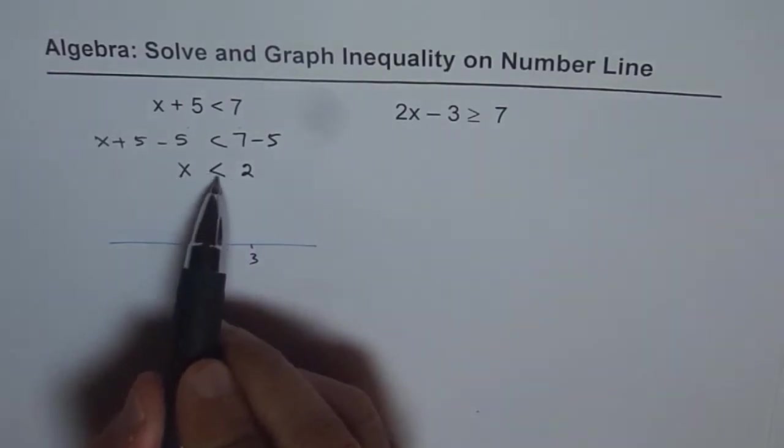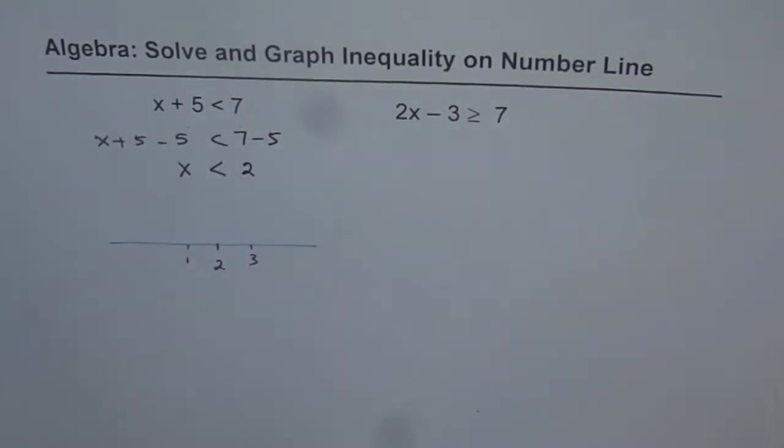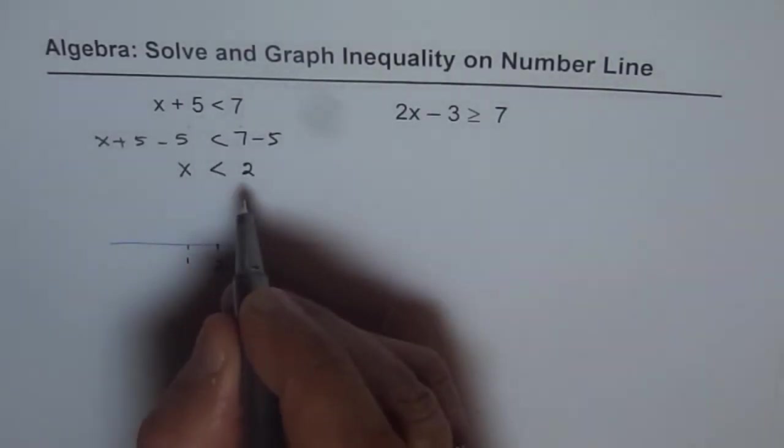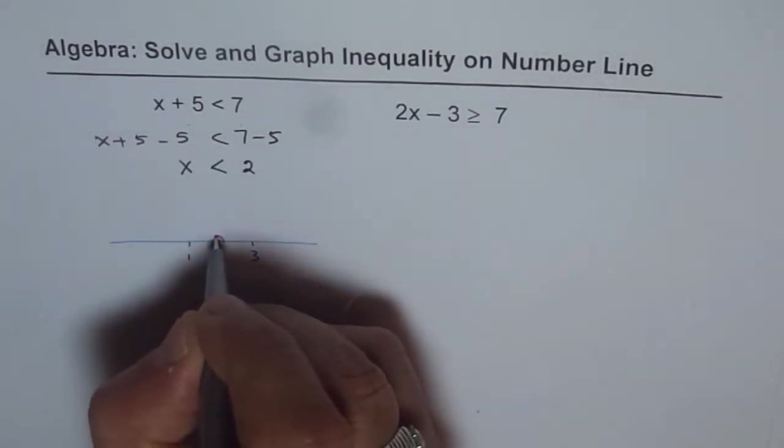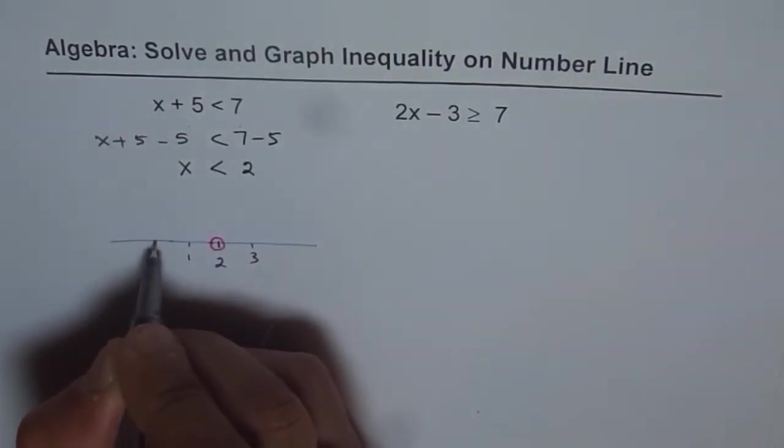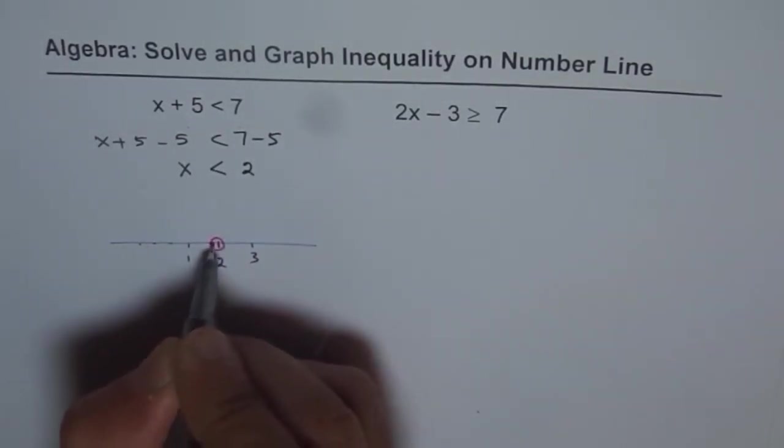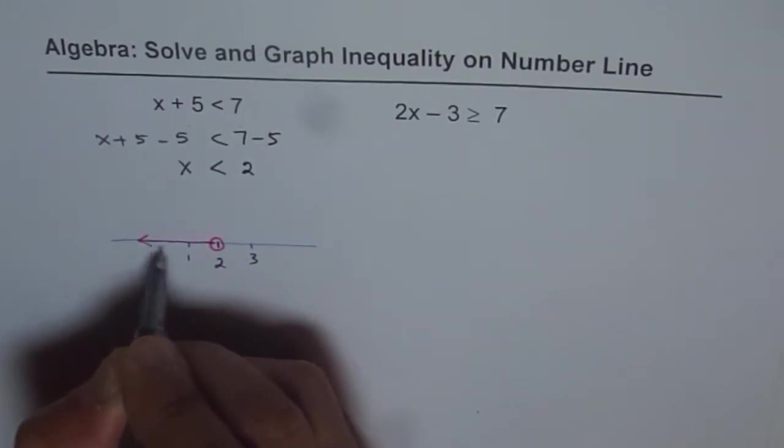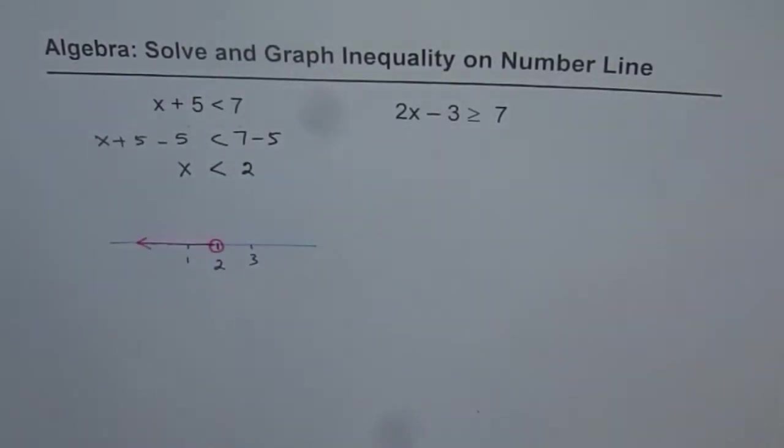As you can see, x is less than 2. 1 is less than 2, right? And 2 is not a part of solution. So make an open dot at 2 or a hole at 2 and arrow pointing towards 1 and the numbers which are less than 2. So make an arrow like this. So that is the solution on a number line. That is as simple as that.